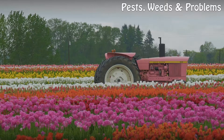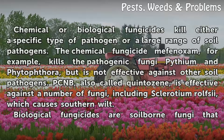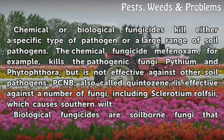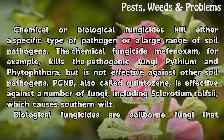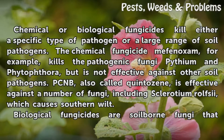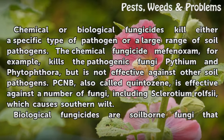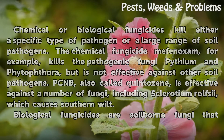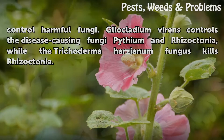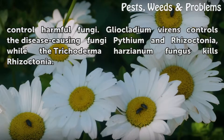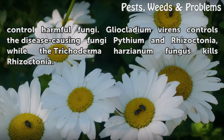Fungicides: Chemical or biological fungicides kill either a specific type of pathogen or a large range of soil pathogens. The chemical fungicide mefenoxam, for example, kills the pathogenic fungi Pythium and Phytophthora but is not effective against other soil pathogens. PCNB, also called quintazine, is effective against a number of fungi including Sclerotium rolfsii, which causes southern wilt. Biological fungicides are soil-borne fungi that control harmful fungi — Gliocladium virens controls the disease-causing fungi Pythium and Rhizoctonia, while the Trichoderma harzianum fungus kills Rhizoctonia.